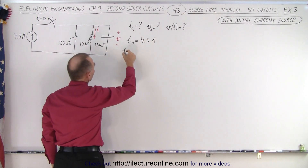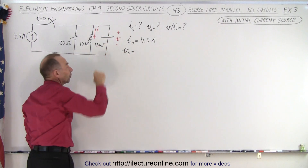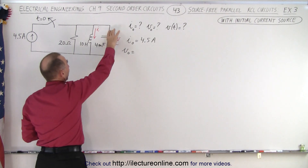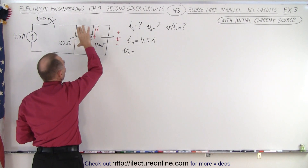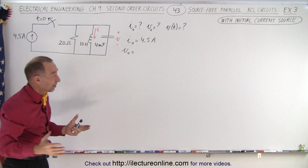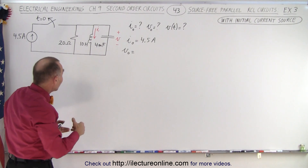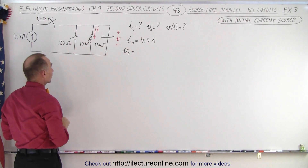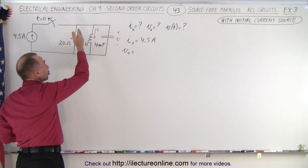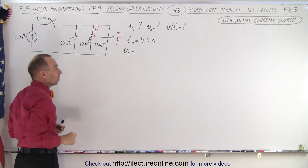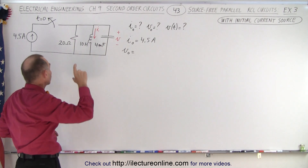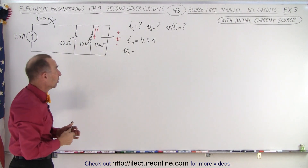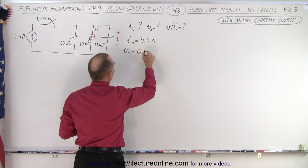Now, what about the initial voltage? The initial voltage is the voltage across the capacitor. The voltage across the capacitor equals the voltage across the resistor equals the voltage across the inductor — yes. But since there's no current flowing through the resistor, there's no voltage drop across it, and since there's no change in current through the inductor, there's no voltage drop across it either. Therefore, the voltage across the capacitor must be zero volts.